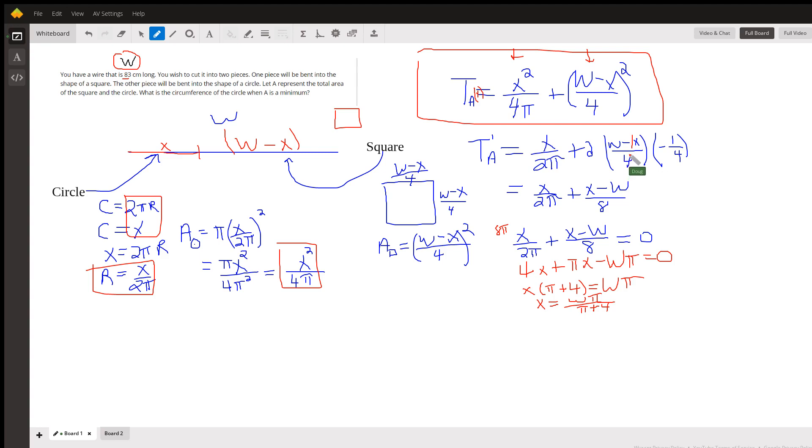And if I simplify that, if I picture distributing this minus sign over W minus x, it becomes x minus W. 2 goes into 4 twice, so that denominator becomes an 8.